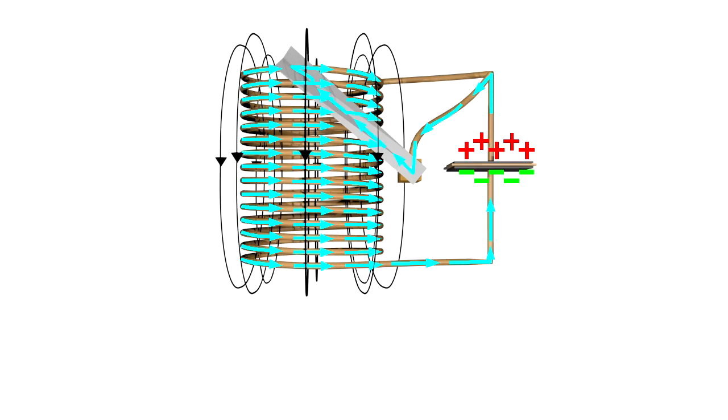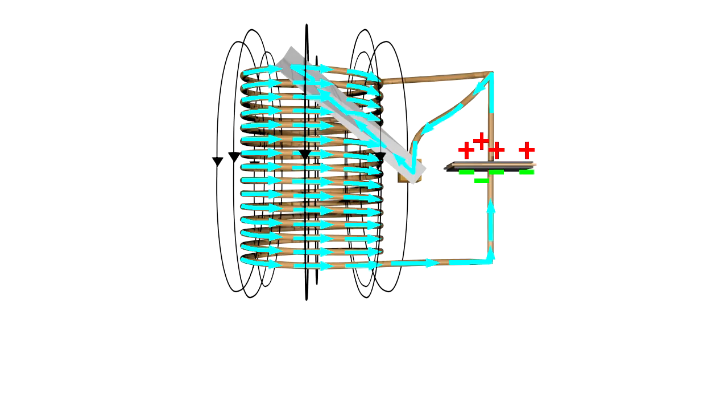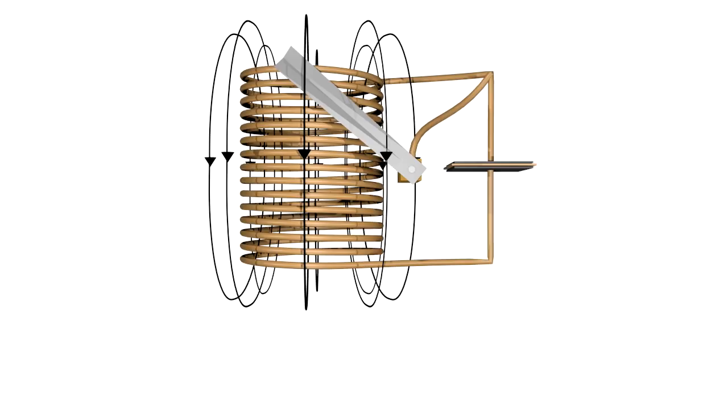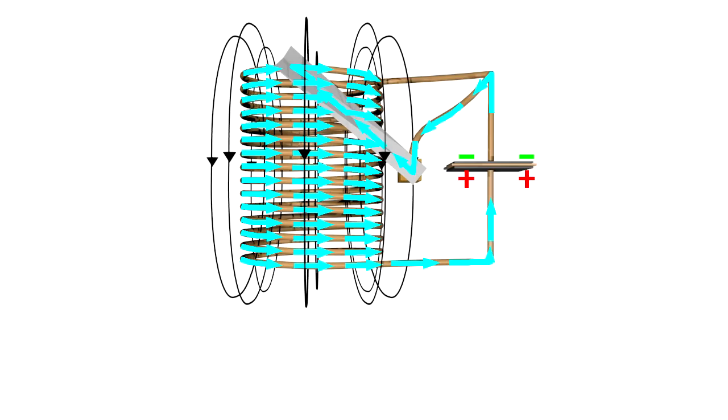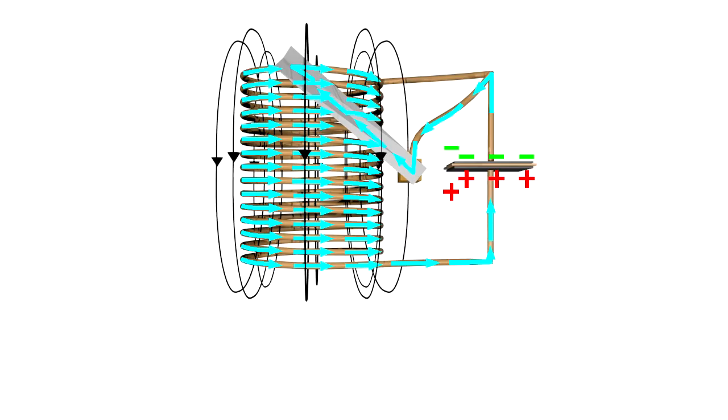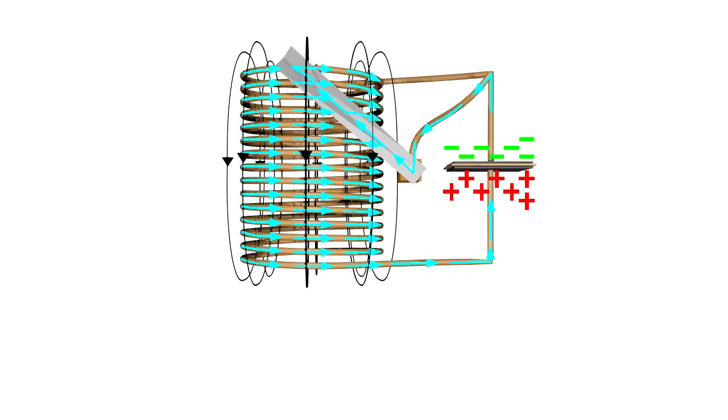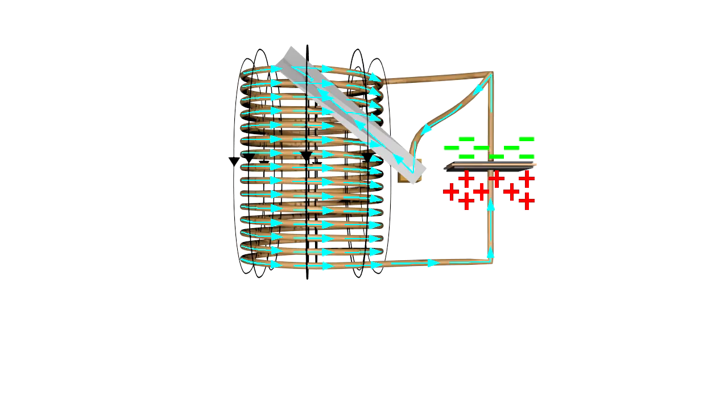But since the capacitor was charged the opposite way, the current flows in the opposite direction from before. That again creates a magnetic field around the coil, which reaches its maximum just as the capacitor is discharged. With no more energy in the capacitor to drive the current, the magnetic field collapses, charging up the capacitor again, but with the charges on the opposite side this time, back the way it was when we started.